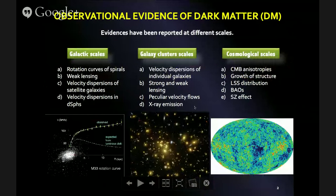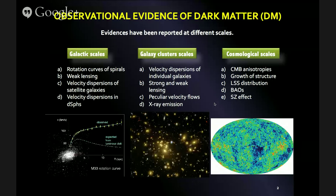We have overwhelming evidence to believe that most of the matter in the universe is actually composed by a non-baryonic, exotic form of dark matter. These evidences have been reported at different scales — from galactic scales to galaxy cluster scales and cosmological scales — giving us overwhelming observational evidence to believe in this kind of dark matter.